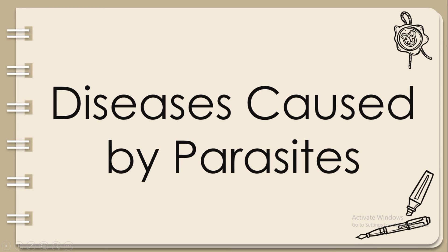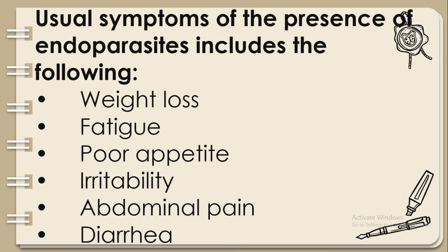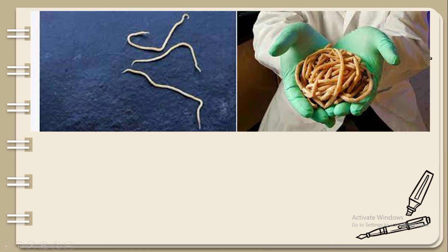Diseases caused by parasites. Number one: Parasitic worms — roundworms, tapeworms, and hookworms — are endoparasites, meaning they live inside their host's body. They are intestinal parasitic worms that live inside the host's intestines, getting nutrients and protection while harming and weakening the host. Usual symptoms include weight loss, fatigue, poor appetite, irritability, abdominal pain, and diarrhea.